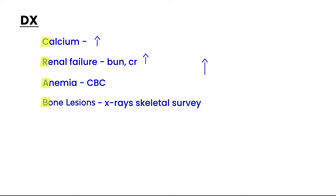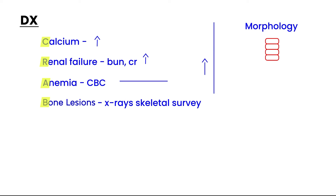One important finding is the morphology of red blood cells in multiple myeloma. They actually appear as stacks — a phenomenon given the special name Rouleau formation. This is often mentioned on clinical vignettes.